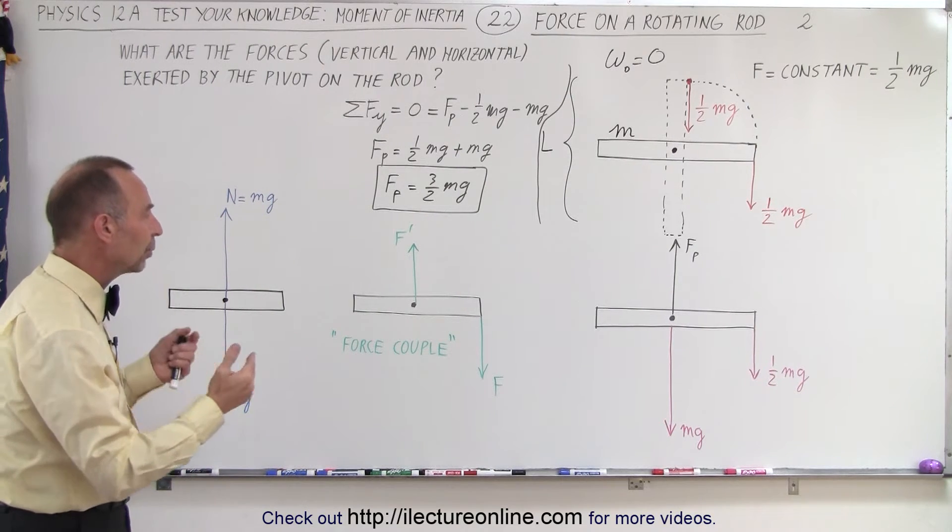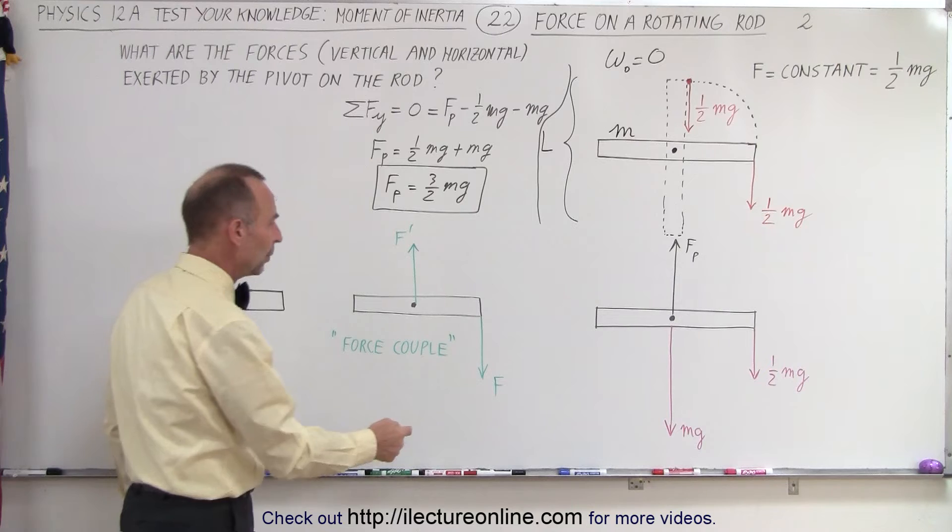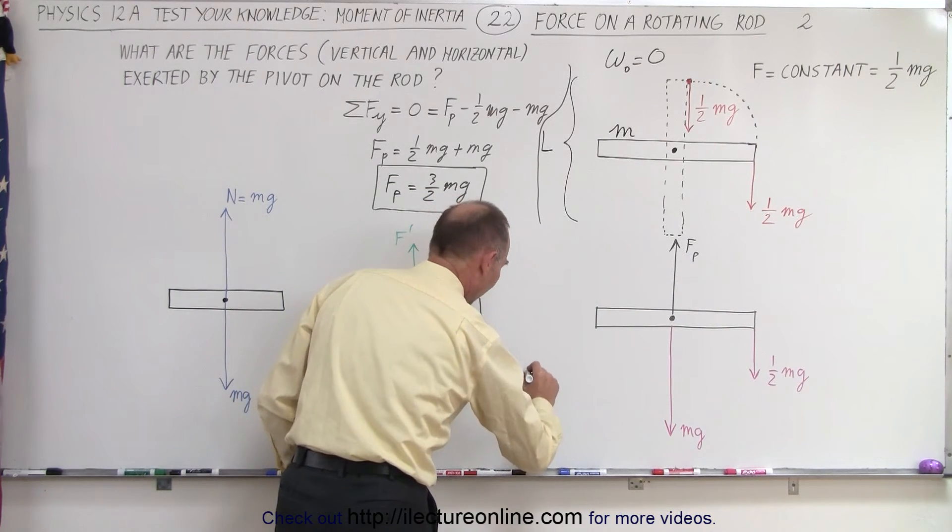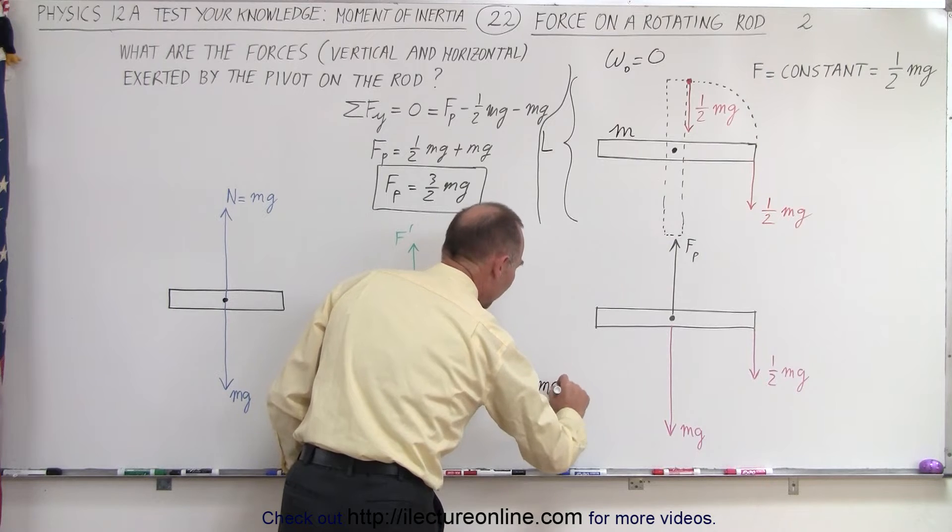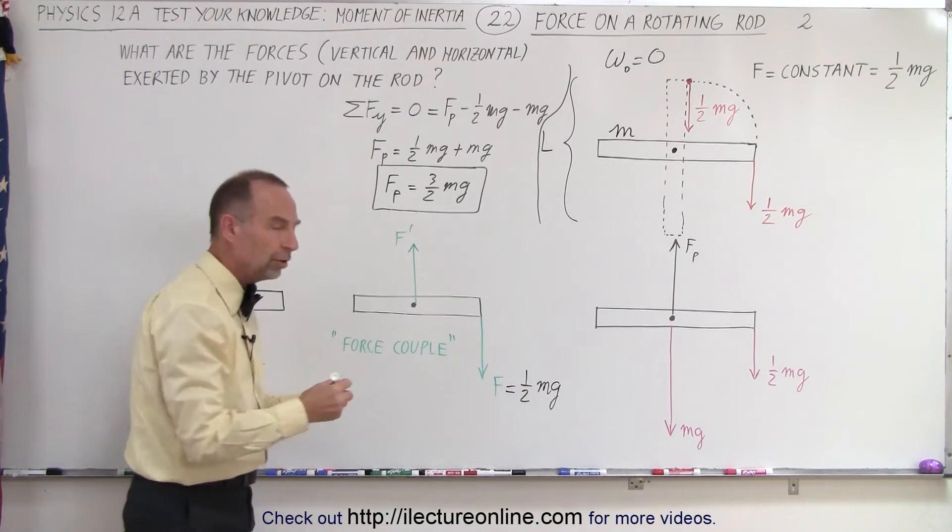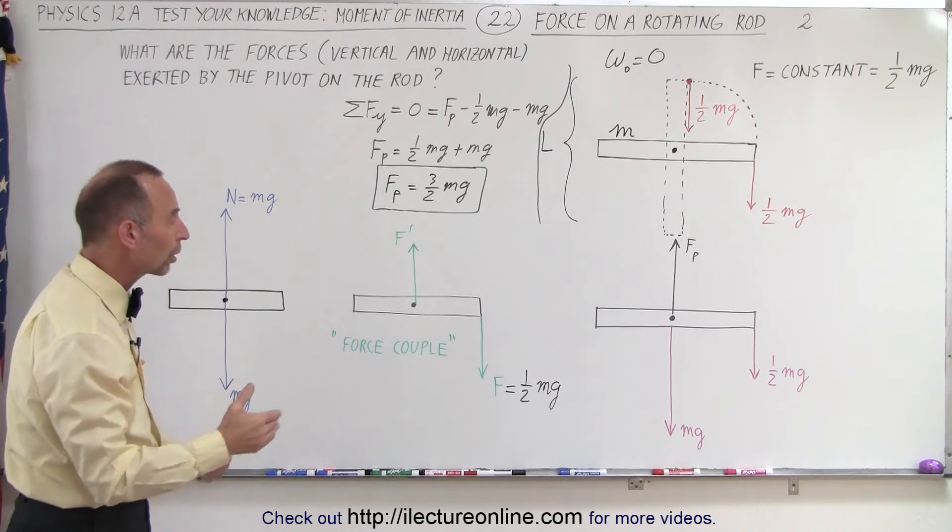Another way of looking at it is that we can look at the two forces separately. We have the force acting down here, which is f equals mg, or a half mg. And whenever we have a force acting not through the point of rotation, so therefore we create a torque,